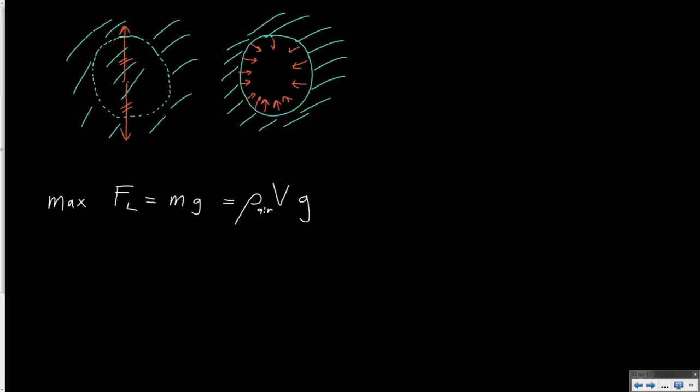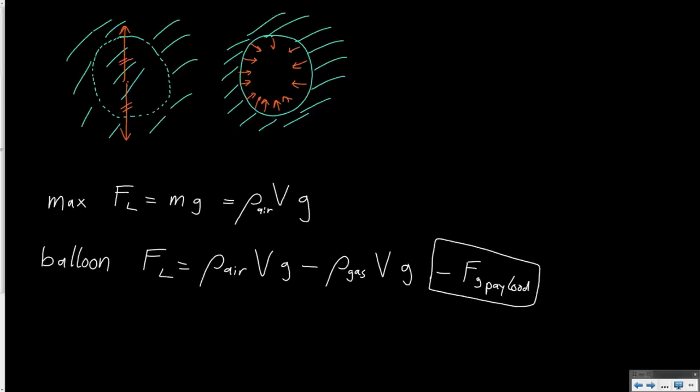If we now have a balloon, in this same volume we put something different. Let's focus on the lift generated by the gas in the balloon. The lift force is not rho air times V times g, but the difference between the two weights. So you subtract what we put in its place, which is rho gas times V times g. In reality you'd also reduce the weight of the payload and balloon, but I want to look at the gross lift of the balloon.